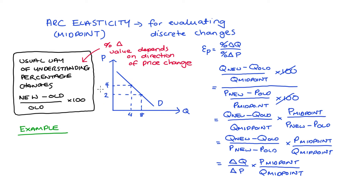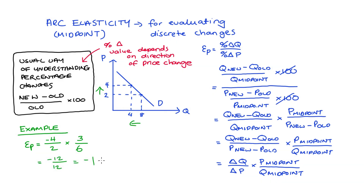Let's quickly work through an example. Say we're thinking about an increase in price from 2 to 4. Our elasticity would be: negative 4 (the quantity change from 8 to 4) divided by 2 (the price change from 2 to 4), multiplied by 3 (the midpoint of the price change) divided by 6 (the midpoint of the quantity change) — and that equals negative 1. If you have trouble finding the midpoint, take the average: 4 plus 8 is 12, divided by 2 is 6.